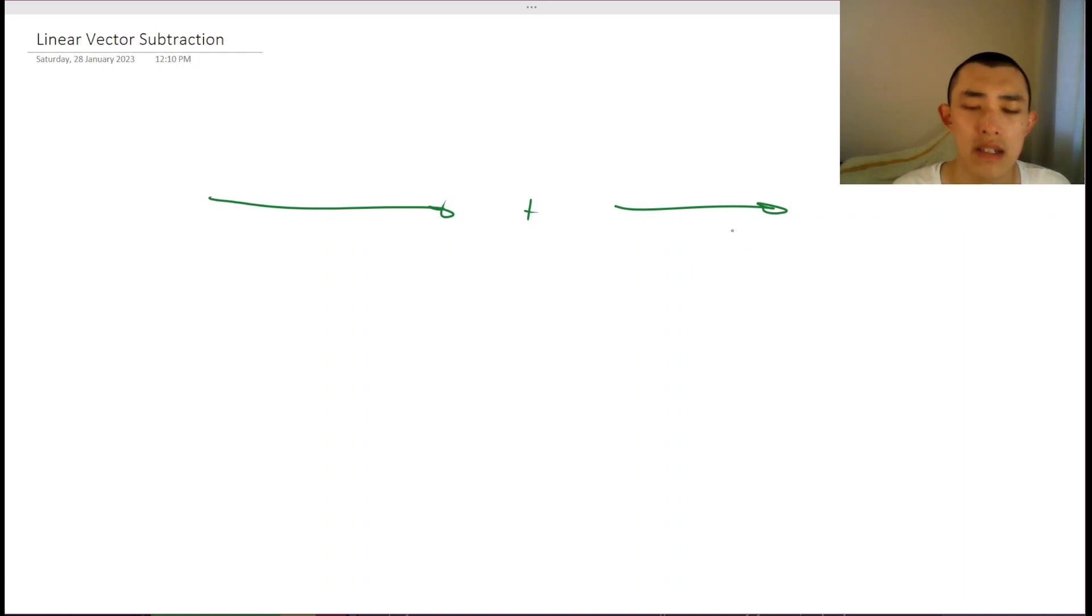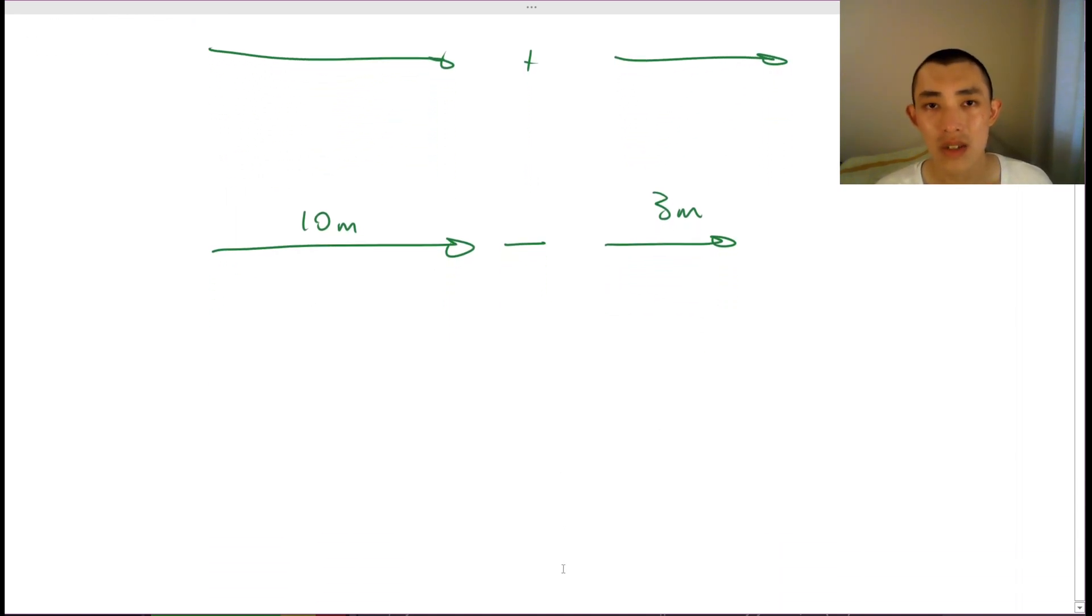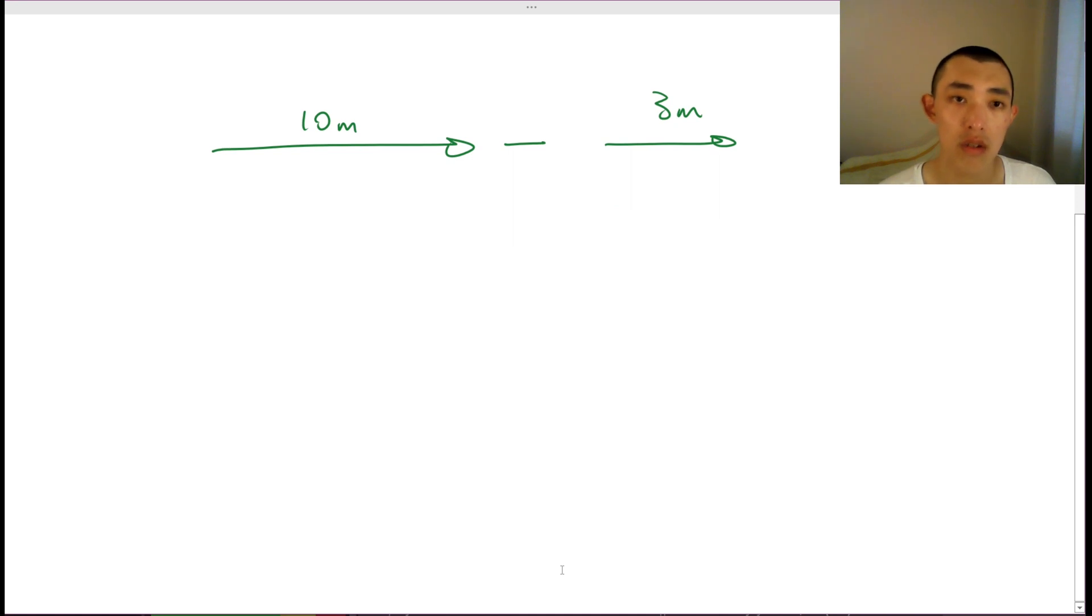So what's interesting about vector subtraction is that it doesn't actually exist. So for example, let's say we had 10 meters towards the right, subtract 3 meters towards the right. There's no such thing as vector subtraction. So what we instead do is we do a bit of a trick.